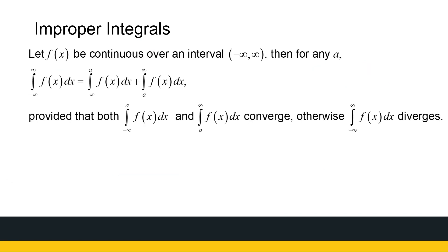We've now looked at integrals from a constant to infinity or from minus infinity to a constant. Let's look at the integral from minus infinity to infinity. If my function is continuous over that whole interval, I'm going to pick any real number a between minus infinity and infinity and break the integral into two parts. As long as both separate integrals converge, the full integral from minus infinity to infinity will also converge.